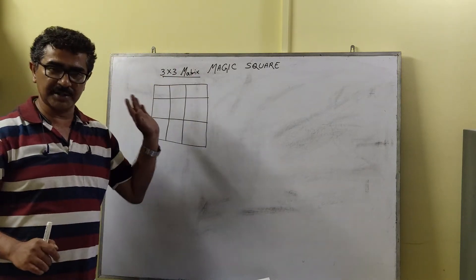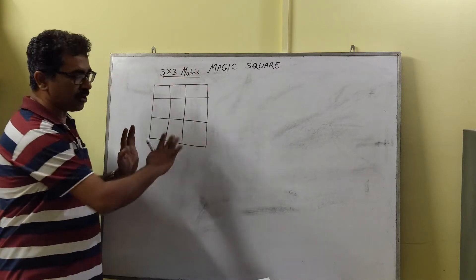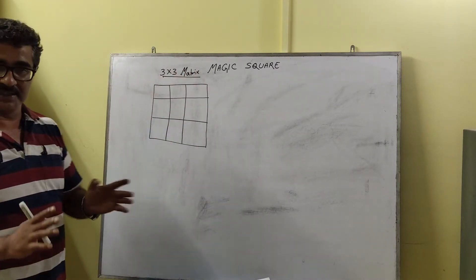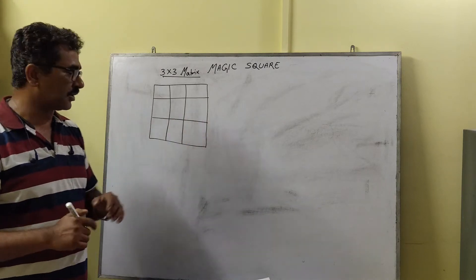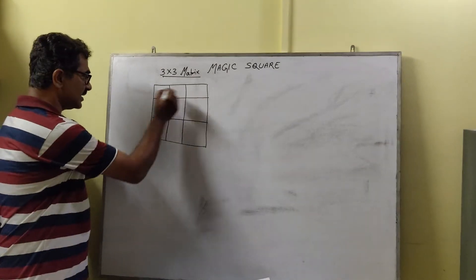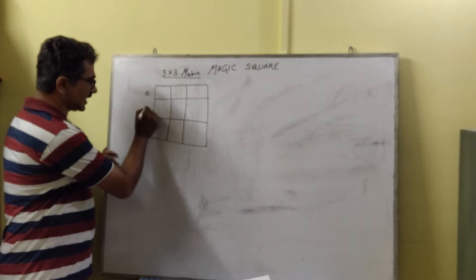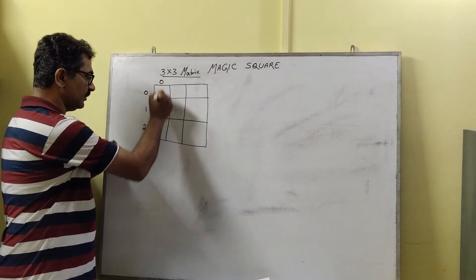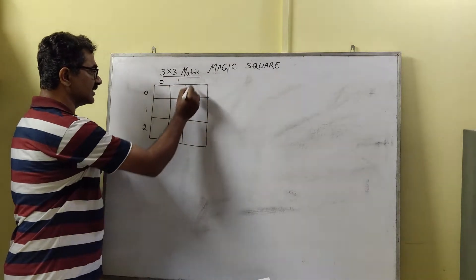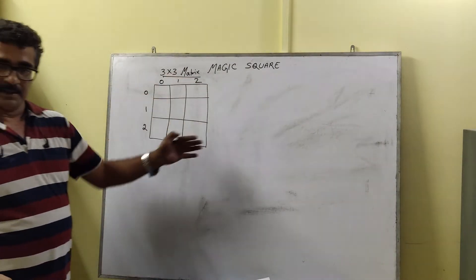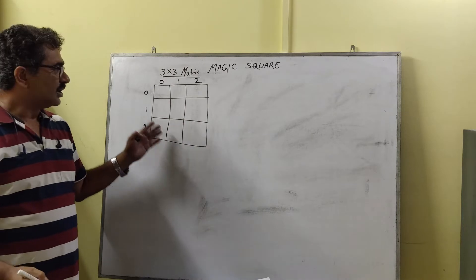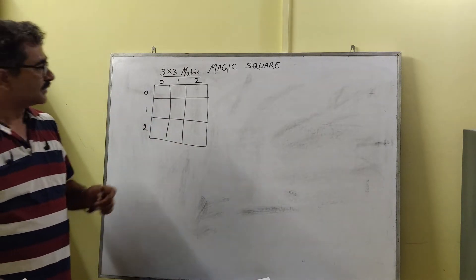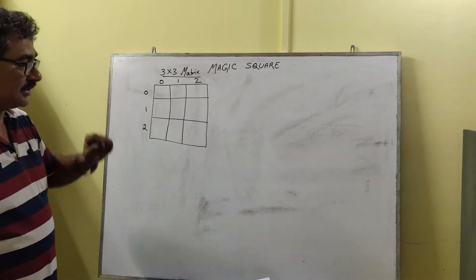Let us start with the 3x3 matrix. First, we draw an empty matrix. We need to understand the logic before going to the program. This is the first row, second row, third row. Similarly, first column, second column, third column. We have taken a 2-dimensional array of size 3x3, odd size, so the size is 3.